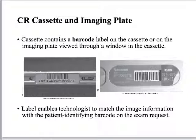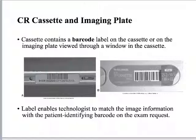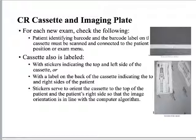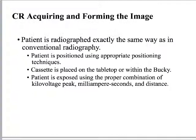Labeling is done by technologists, so any time a technologist manually enters information, that introduces the possibility of user error. Are there times when a technologist incorrectly enters information? Yes. You are really where the buck stops in terms of catching labeling errors on images. Some cassettes, like Kodak's, allowed you to write on them with orientation stickers, but in general, most departments just use the barcode.